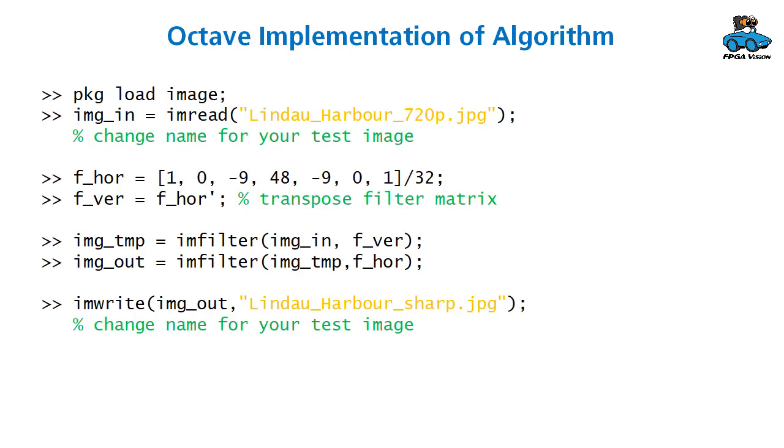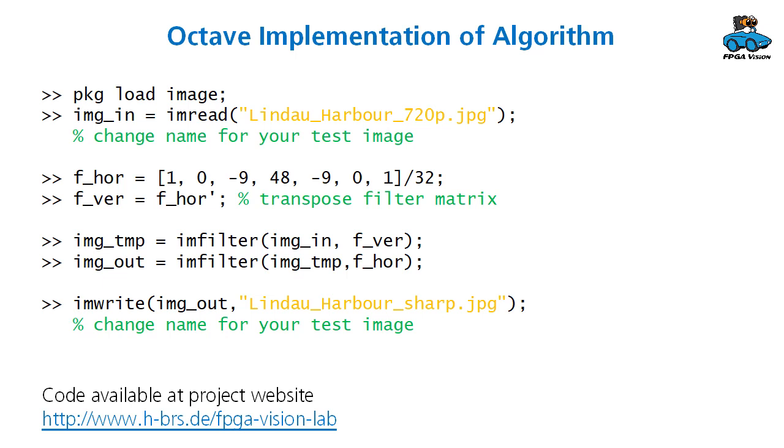Now we can try out our algorithm with a test image. And again, we use Octave. With the image package, we can read a JPEG image. Horizontal filter is here. Vertical filter is horizontal filter transposed. These are the filter functions. And then we write the result. The code is available at our project website. And if you use your own test image, you have to change the names of the image files.